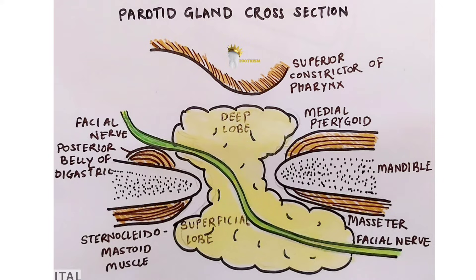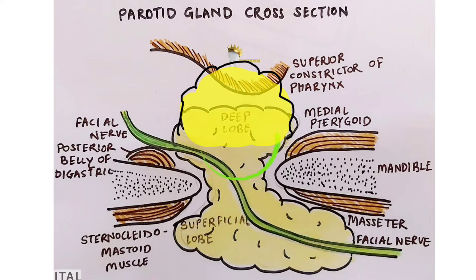When a parotid tumor develops in the deep lobe of the gland, it presents as a swelling in the lateral wall of the pharynx, and not as a facial swelling.